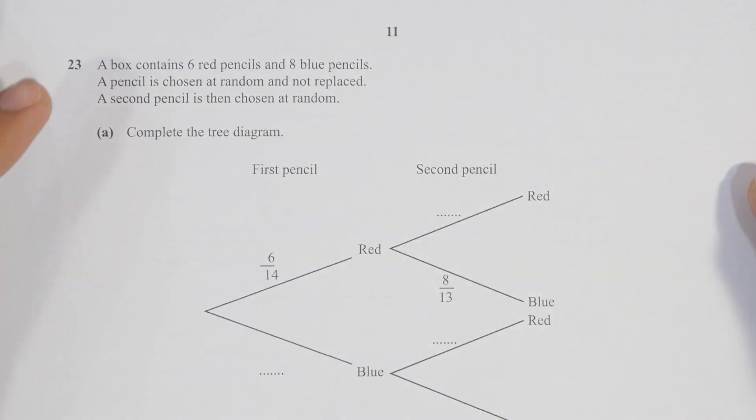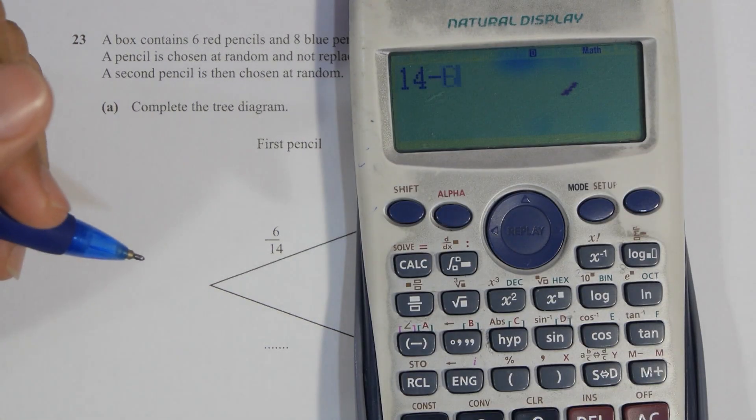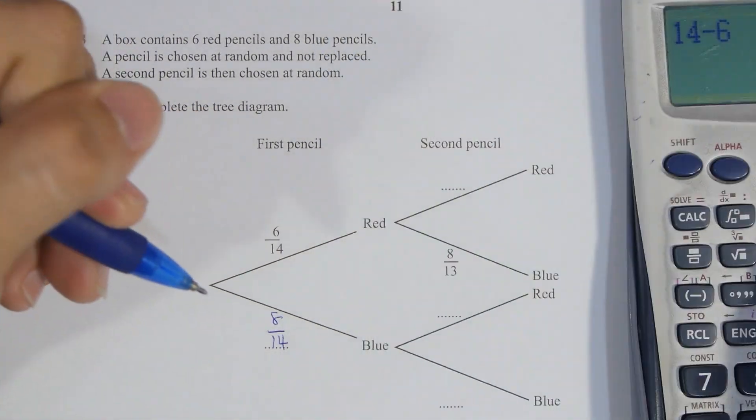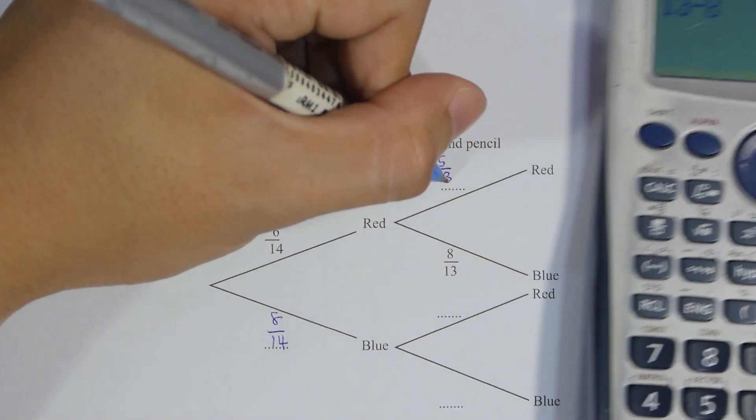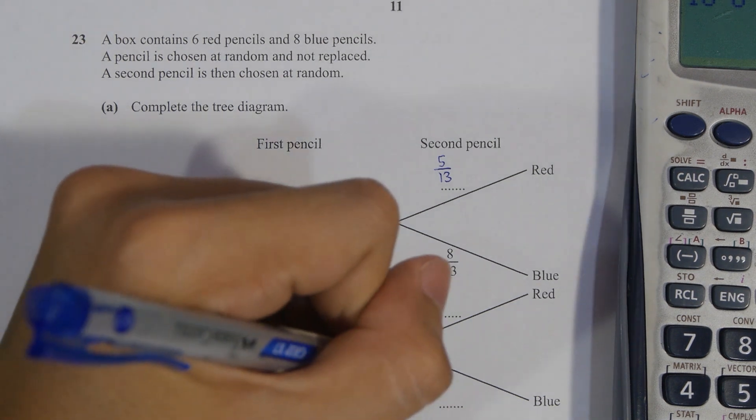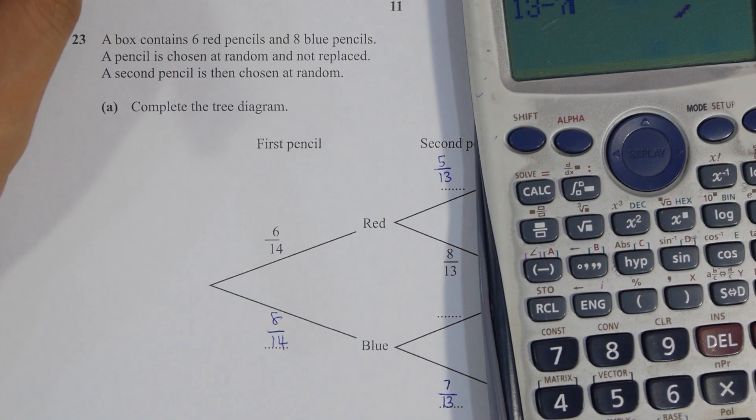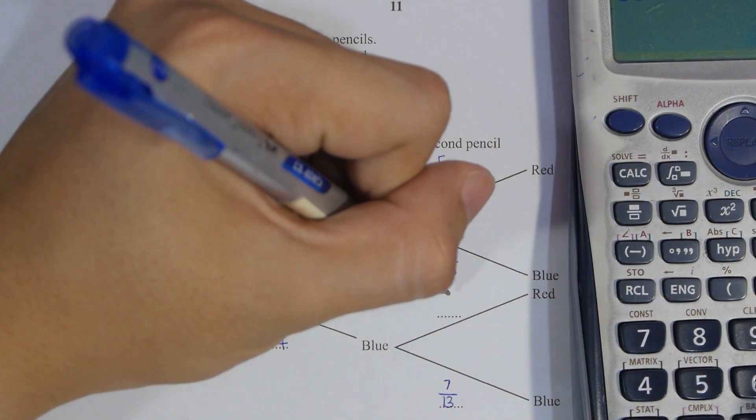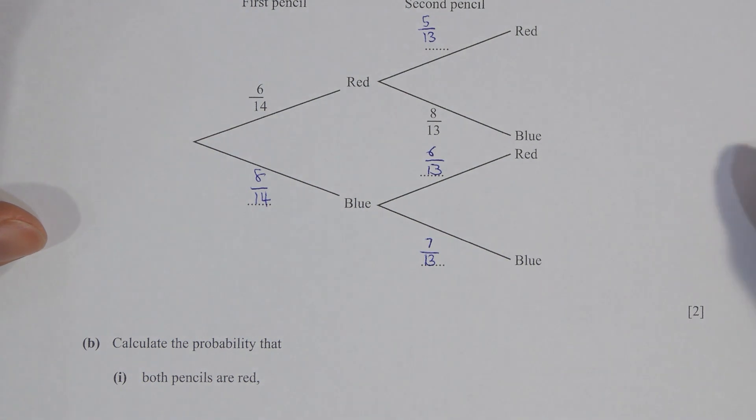For the last question here, question 23a. So I filled up the tree diagram. For us to get blue pencil, it will be 8 over 14, and the second pencil part red will be 5 over 13. For blue, the second time we get blue will be 7 over 13, and for us to get red will be 6 over 13 as well.